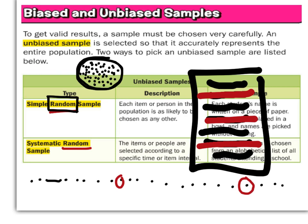So you have these two types, and again, they're very random and unbiased. A simple random sample is just choosing people from a group. A systematic random sample is where you're taking every other person, every third person, every fourth, fifth person, and so forth.